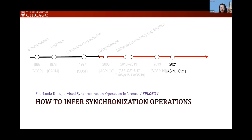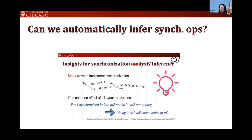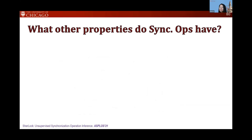That leads to the last piece of work. After TSVD, we went back to thinking about inference. In TSVD we were guessing which methods are synchronized based on behavior — by observing if delaying one delays another. We thought: maybe we can apply this idea further, and use behavioral analysis to infer which variable reads and writes, and which method starts and exits, are actually used for synchronization.